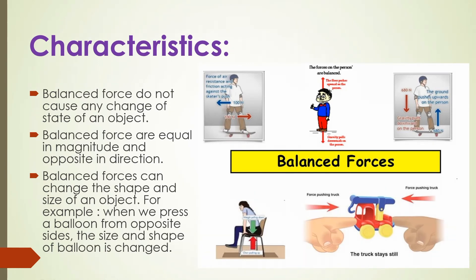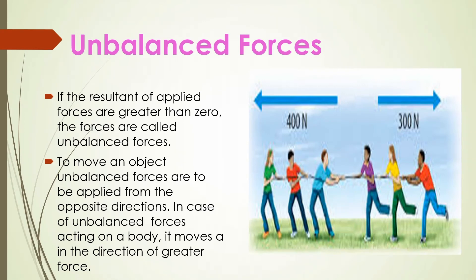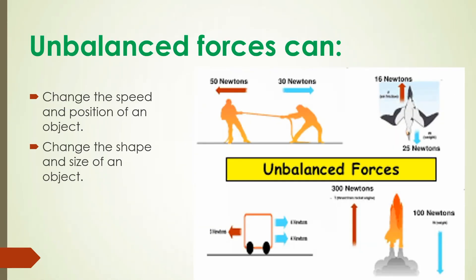Next is unbalanced force. Using the same rope example — if one side has 400 N and the other side has 300 N of force, then one side has more force. The net resultant force is 400 N minus 300 N, which equals 100 N. This net force is greater than zero, so this type of force is called unbalanced force. Unbalanced force causes any object to move in the direction of the greater force. Unbalanced force can change position, speed, and size.